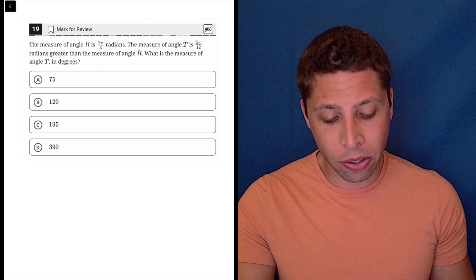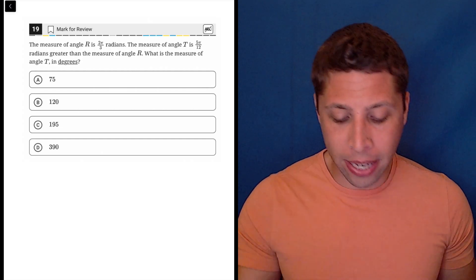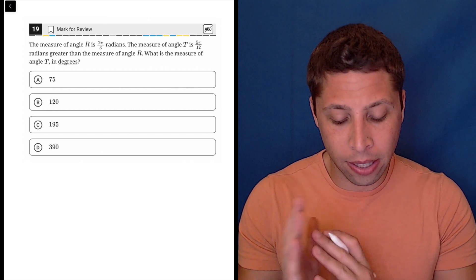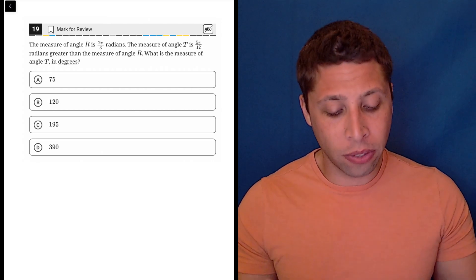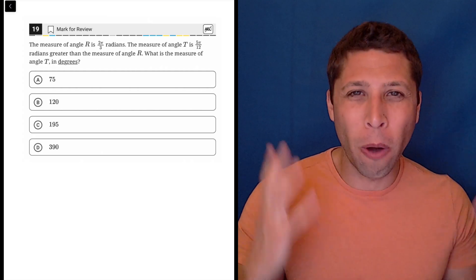This question does have this twist though, where we have two angle measures in radians and we're trying to add them together, right? Angle R is being compared to angle T, and the measure of T is that amount greater than R, so basically we want to add that on. So hopefully that makes sense, that we're really just taking this 2π/3 and adding in the 5π/12.